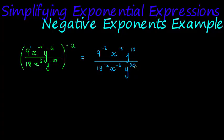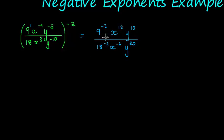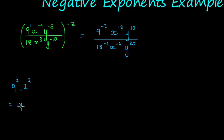Now I'll simplify the constant numbers by dividing them with one another. Whenever we have things with the exact same exponent, I can perform operations on the bases. For example, 9 to the power of 2 times 2 to the power of 2 can be written as 18 to the power of 2 — I multiply the bases when exponents are the same. Note: this does not apply to addition or subtraction — exponents have nothing to do with adding and subtracting.